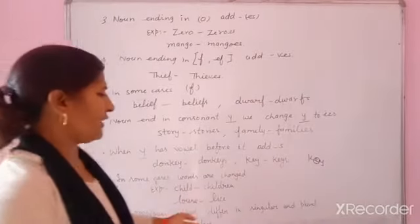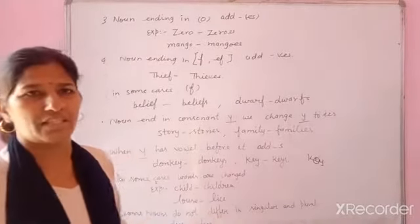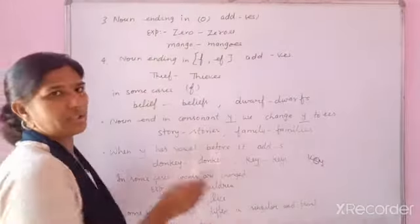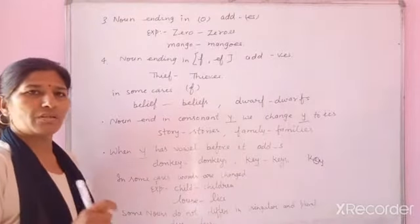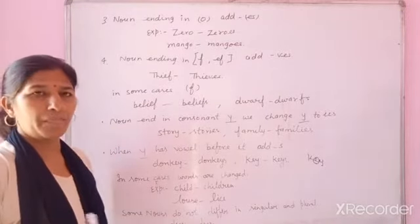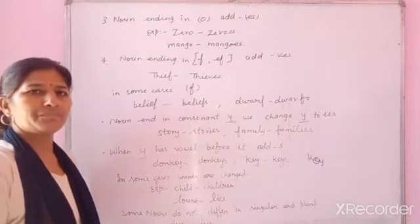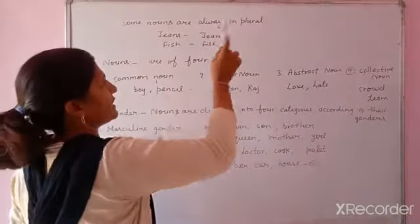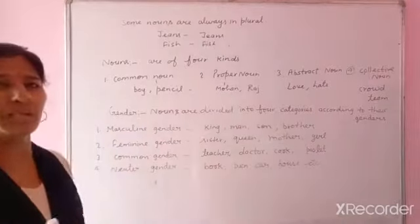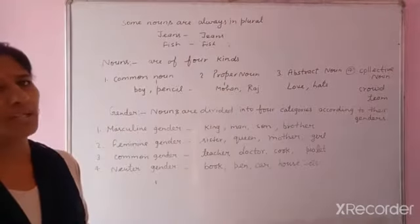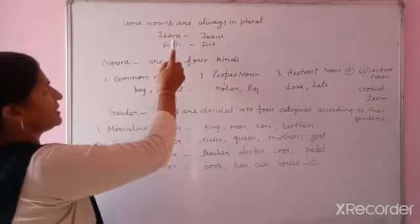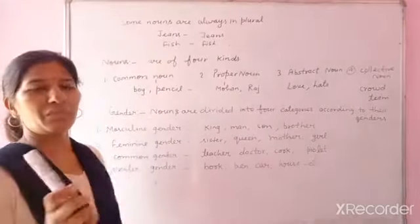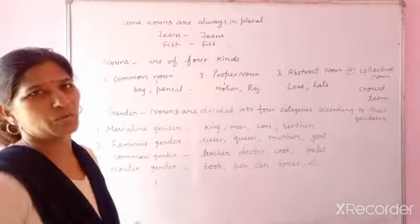Some nouns do not differ in singular and plural — kuch nouns aise bhi hote hain jo singular aur plural mein differ nahi hote. 'Deer' stays 'deer', 'fish' stays 'fish'. Last point: some nouns are always in plural — jaise 'jeans', aap kabhi 'jean' nahi bolte, 'jeans' bolte hain. 'Fish' — aap 'fishes' nahi bolte, 'fish' bolte hain.